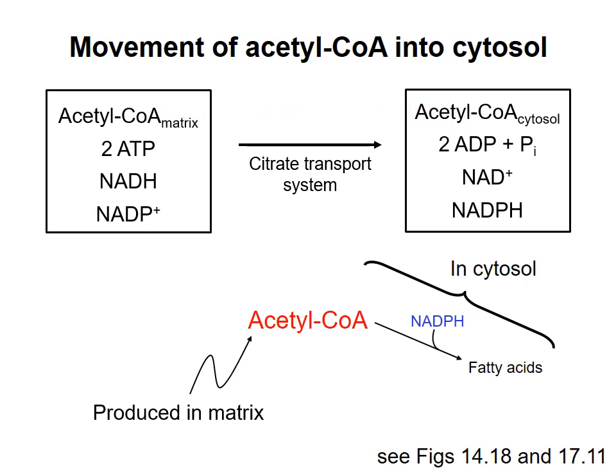During these reactions, two electrons are taken from NADH and moved to NAD+, to produce NADPH. You don't need to worry about the details of the reactions in the citrate transport system, but you should remember the things that I've put in these two boxes here. Note that production of NADPH during this process is helpful because NADPH is required for the synthesis of fatty acids.